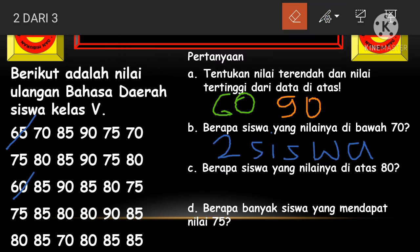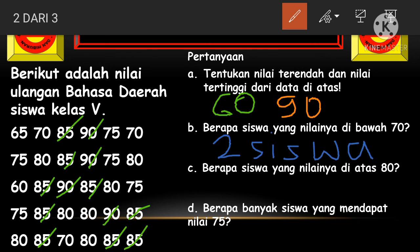Sekarang kita cek: berapa siswa yang nilainya di atas 80? Berarti yang nilainya di atas 80 itu berapa saja? Mulai dari 85, kita hitung bersama-sama: 1, 2, 3, 4, 5, 6, 7, 8, 9, 10, 11, 12, 13. Ternyata ada 13 siswa yang memiliki nilai di atas 80.